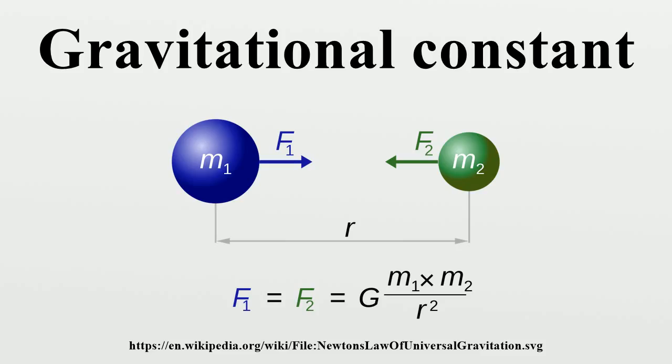Indeed, the limited accuracy available for G limits the accuracy of scientific determination of such masses in the first place. For Earth, using as the symbol for the mass of Earth, we have for Sun, we have